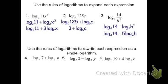For the next three problems, we're going to go the other way — using the rules of logarithms to rewrite each expression as a single logarithm. I'll do the first one with you. If we take log base 6 of 7 plus log base 6 of p, we can rewrite this using the log of a product rule. Right now we have the sum of two logs, which means we can write this as a single log of a product: log base 6 of 7 times p.